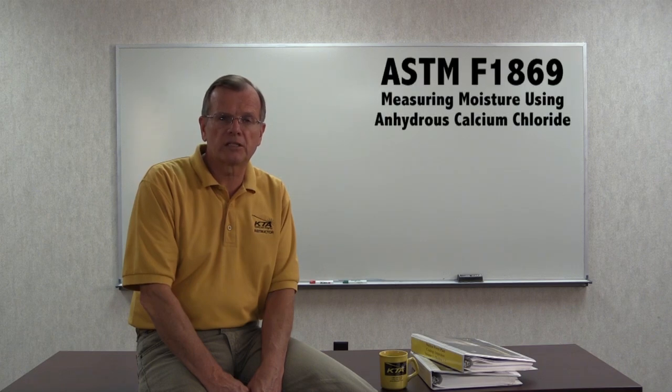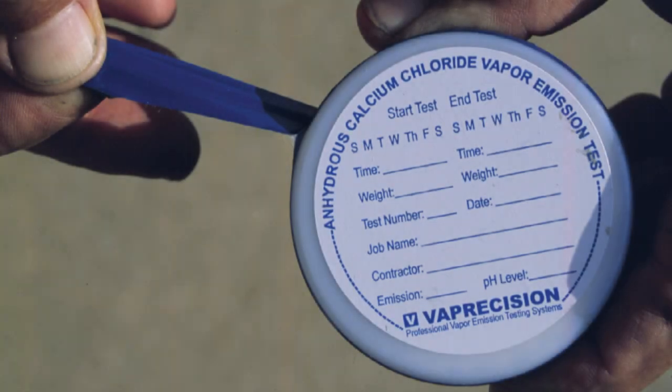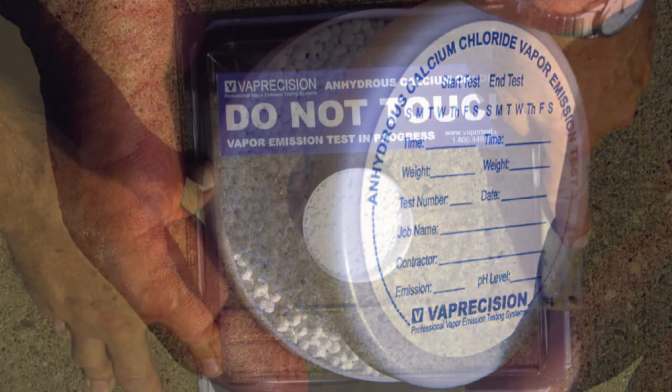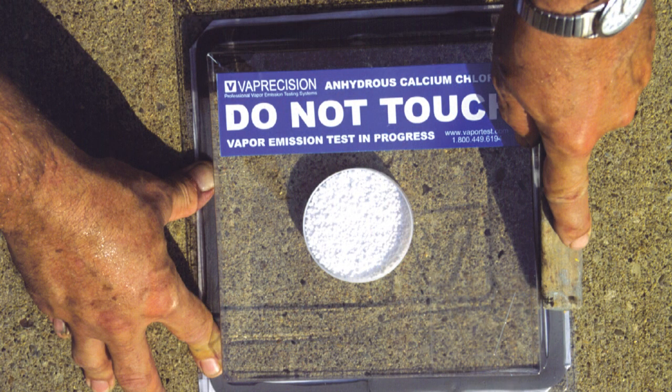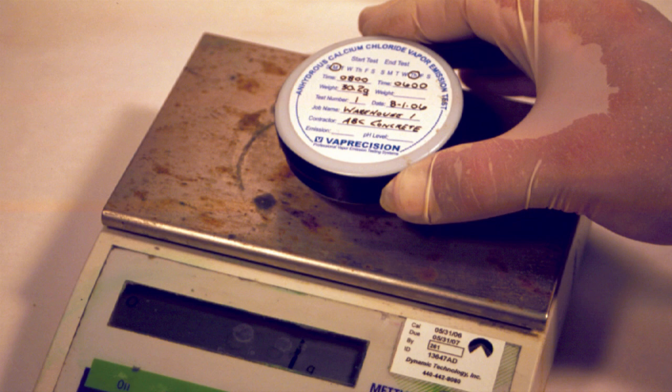The first, anhydrous calcium chloride, this method is addressed in ASTM F-1869. This is a non-destructive test that requires exposing the concrete slab to anhydrous calcium chloride for a given length of time. The anhydrous calcium chloride is stored in a plastic container and is weighed to the nearest tenth of a gram before you expose it to the surface environment, and again after exposure, to determine the increase in weight.